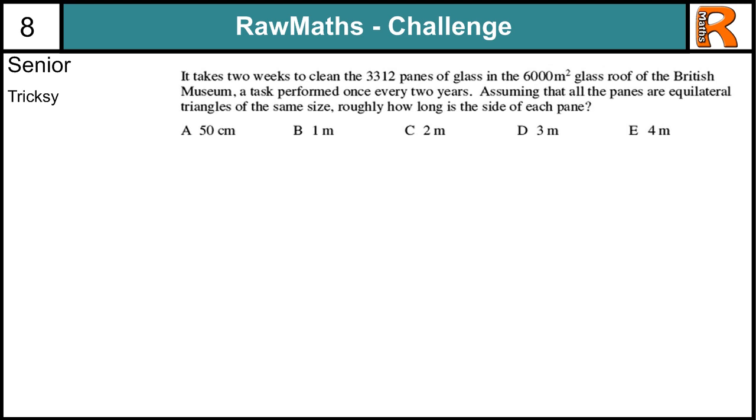Senior Tricksy from Raw Maths Challenge number 7. If you haven't had a go at this question yet, pause the video and give it a try now. But you will need to know a little bit of trigonometry to be able to do this. Okay. Essentially, we just need to work out that one glass pane, and this is an approximation question, so we don't need to be exact, so I'm going to do 6,000 divided by 3,000, because there are just over 3,000 panes, 6,000 meters squares, so we're going to talk about 2 meters square per pane.